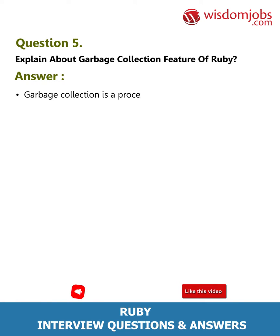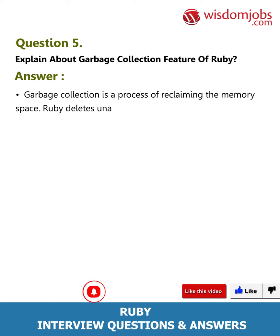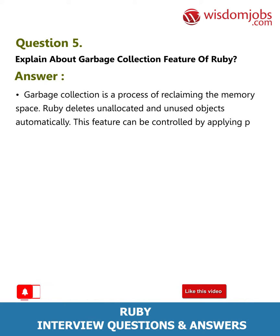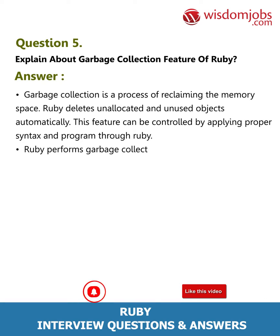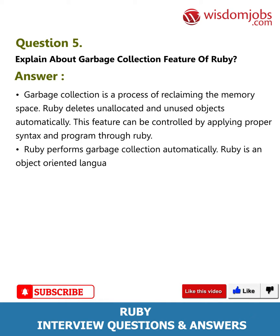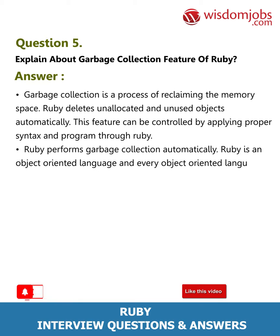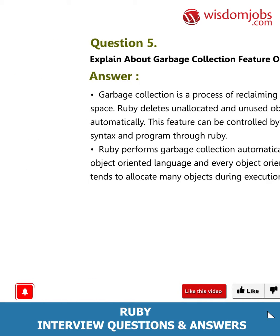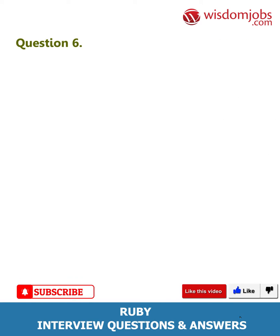Question 5: Explain the garbage collection feature of Ruby. Answer: Garbage collection is a process of reclaiming memory space. Ruby deletes unallocated and unused objects automatically. This feature can be controlled by applying proper syntax and program through Ruby. Ruby performs garbage collection automatically. Ruby is an object-oriented language, and every object-oriented language tends to allocate many objects during execution of the program.